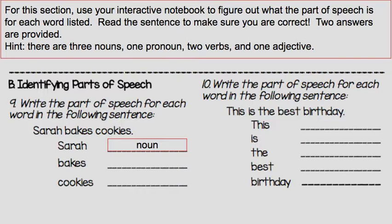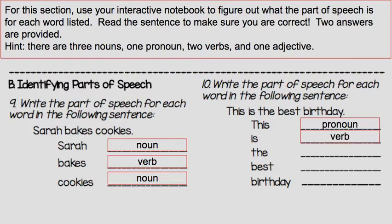For 'Sarah bakes cookies': Sarah is a noun — that's a person. Bakes is an action, so that's a verb. And cookies are a thing, so that's a noun. Number ten, 'This is the best birthday': This is a pronoun. Is is a verb. The is an article. Best is describing the kind of birthday, so it's an adjective. And birthday is a thing, so it's a noun.